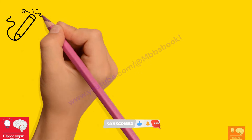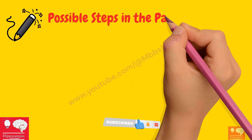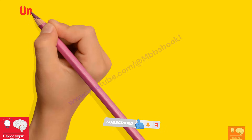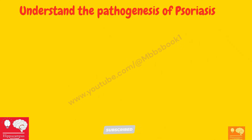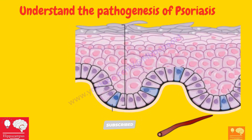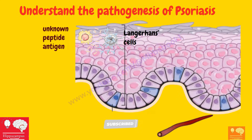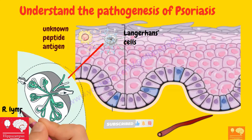Moving on to the very important part of this topic — the pathogenesis of psoriasis. When discussing pathogenesis, we need to remember what happens to the epidermis. The pathogenesis starts with activation of antigen-presenting cells in the epidermis. Although a specific psoriasis antigen has not yet been identified, an unknown peptide antigen triggers immune activation of T cells. This antigen is picked up by the Langerhans cells — the antigen-presenting cells in the epidermis — which take up and process the autoantigen and migrate to the regional lymph nodes.